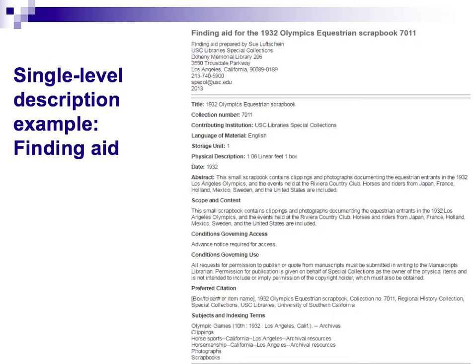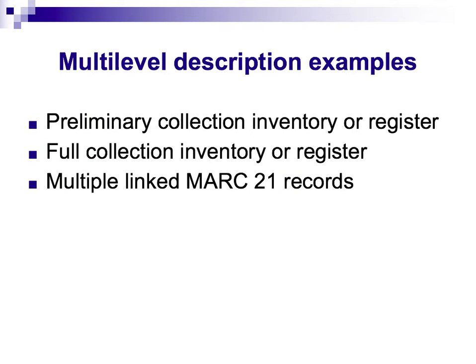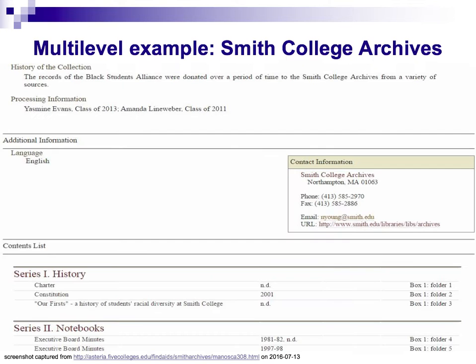And another. Examples of multi-level description include preliminary collection inventories, multiple linked MARC records, or full collection inventories, such as this example.